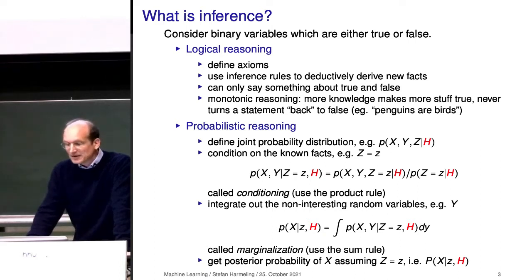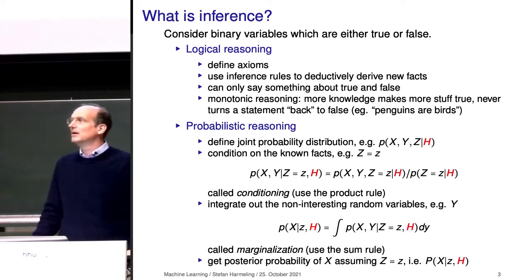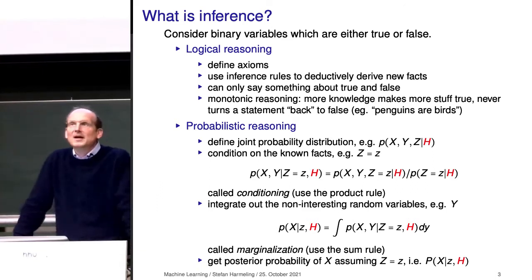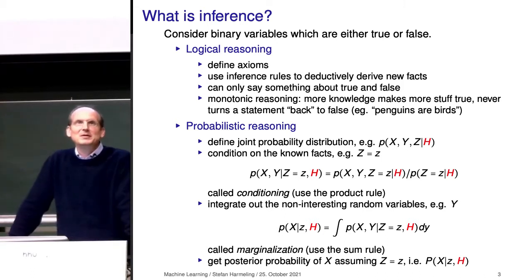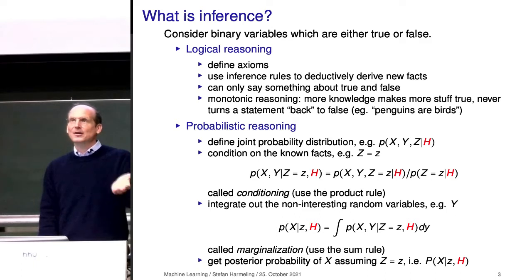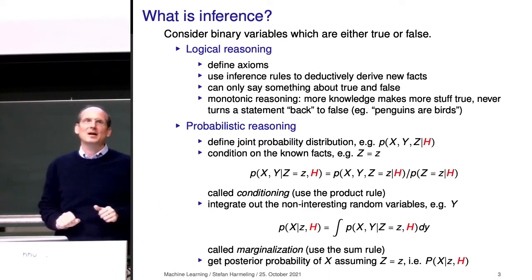For example, given that soccer player Erling Haaland switches to München, what is the probability that Borussia Dortmund becomes the German soccer champion? That's a statement we'd like to answer. If you like betting money on these things, you should use these super powers of probabilistic reasoning and make use of graphical models. For instance, whether a soccer player switches to Bayern Munich doesn't change anything for Hertha BSC — those are independencies you should capture in your graph.